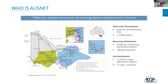AusNet is a private company that owns and operates much of the critical energy infrastructure in Victoria, Australia — the southeastern part of the mainland. We own and operate the entire electricity transmission system as well as a portion of the electricity distribution and gas distribution systems. This gives us unique insights from the meters on people's houses right up to very high voltage equipment across the state. We're also very active in supporting the transition to a renewable energy future.